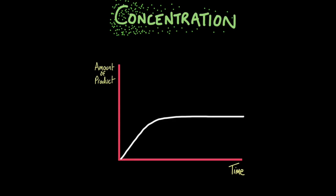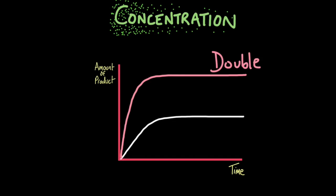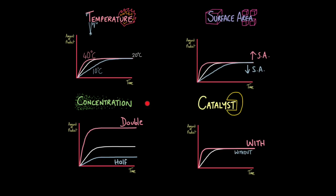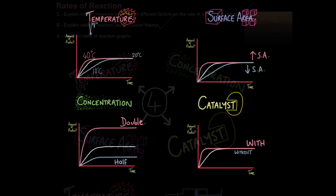Concentration is different from the other factors in one critical aspect. Let's say this is your standard concentration with a normal rate of reaction. If we double the concentration — throwing more reacting particles in — not only does the rate of reaction get faster, but because we are actually adding more reacting molecules, more product will be formed. So the levelling-off line is much higher than the original line. Similarly, if we halve the concentration, we get a slower rate of reaction and also less product formed. Remember with concentration you also have to take into account the product quantity — it's the only factor where the quantity of product changes as well.